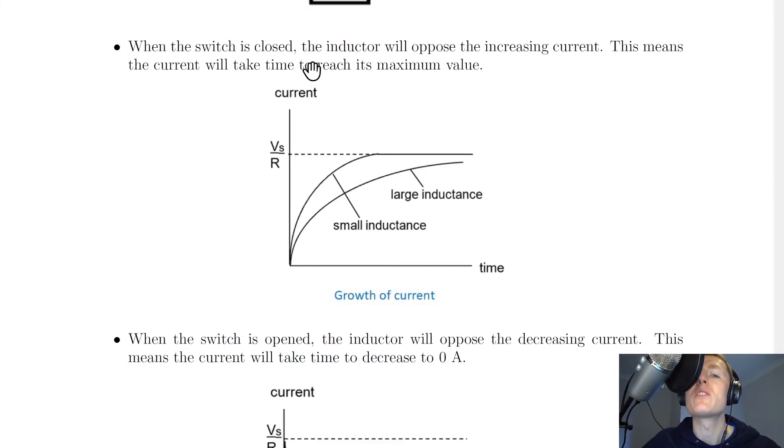It then says that when the switch is closed, the inductor will oppose the increasing current. This means the current will take time to reach its maximum value. So here we have a graph of current against time showing this growth of current. So the current will start at zero,